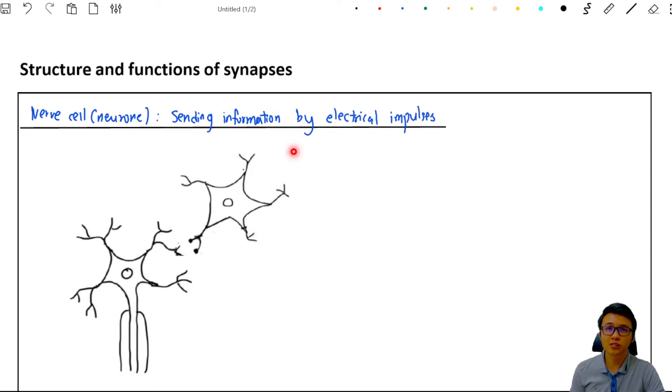After you understand the functions of the neuron, then we can start this topic. Now from this diagram, you can see there are two nerve cells over here. The first one, the nerve cell that looks like a star, is called the relay neuron. The second nerve cell here is called the motor neuron.